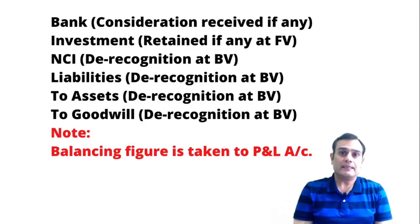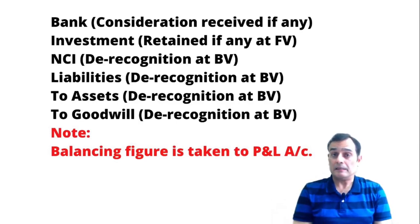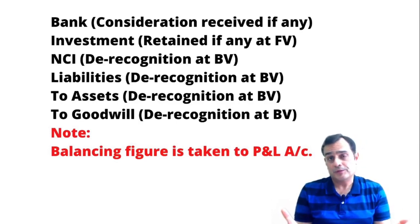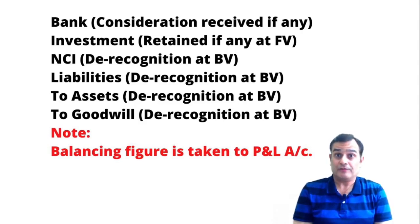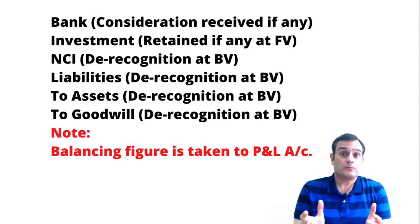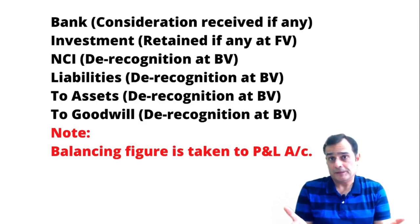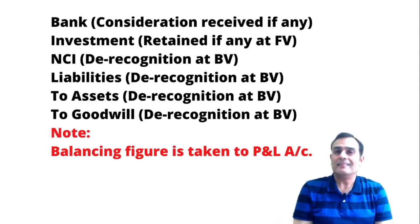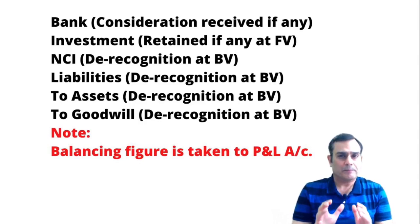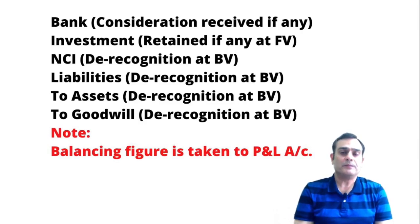You need to put in the following entry: debit bank to the extent there is consideration, if any — because if it is a deemed disposal there is no consideration. Record the investment to the extent of the fair value of any interest which is retained, if any — because if it is a complete disposal then investment would not appear. De-recognize the NCI, de-recognize the liabilities, de-recognize the assets, and de-recognize the goodwill. Whatever is the balancing figure in this entry represents the profit or loss, which is taken to the P&L.